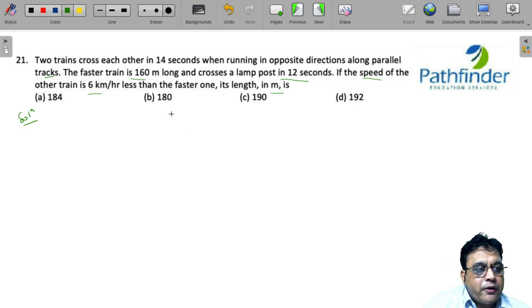So, we are told that the length of the faster train is 160 meter and it crosses a lamp post in 12 seconds. Which means the speed of the faster train is 160 by 12, that is 40 by 3 meter per second.